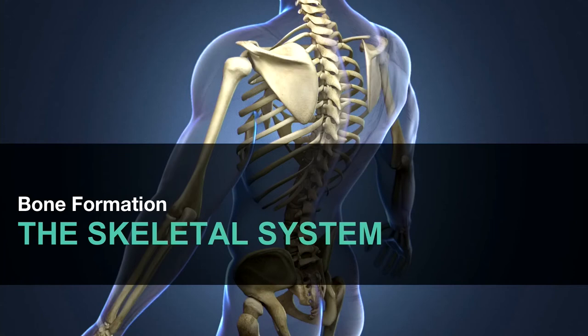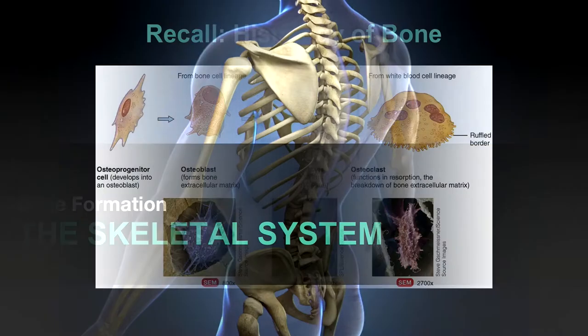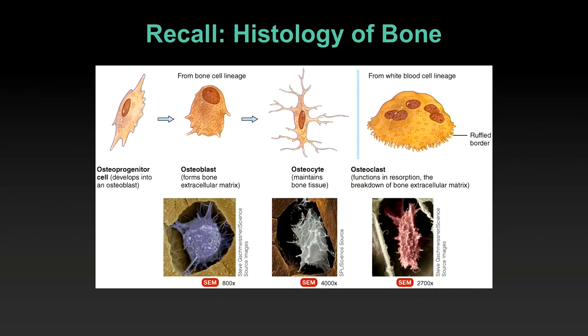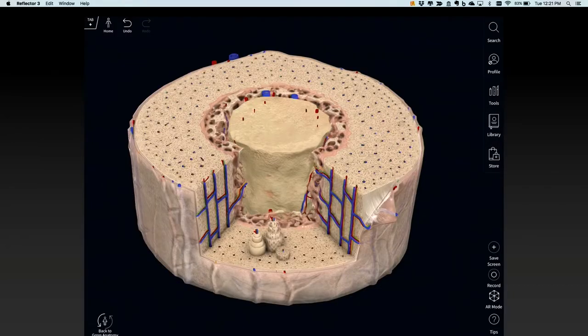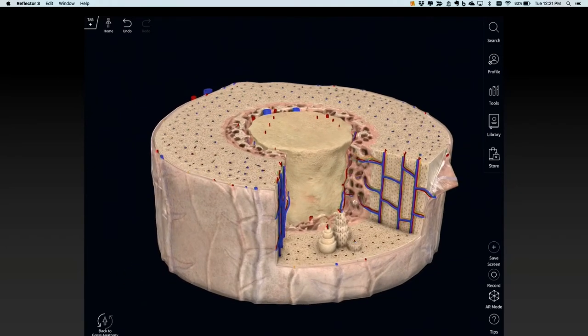We're on the skeletal system now. We spent a lot of time last class talking about different shapes of bones. You did a good job of reintroducing the main players in bone histology, so I'm not going to spend a lot of time on that. You should also probably know the general shape and layout of bone. This is not anything new and surprising — you've seen this in lab one, and we go back to it in lab this week.